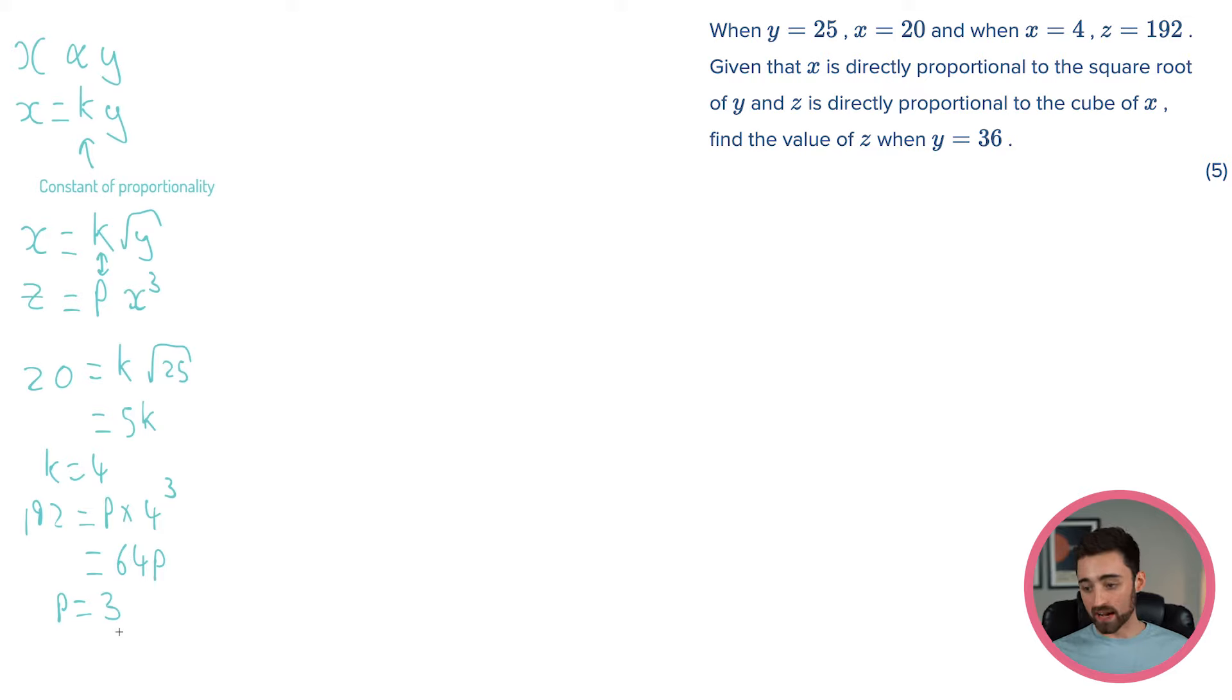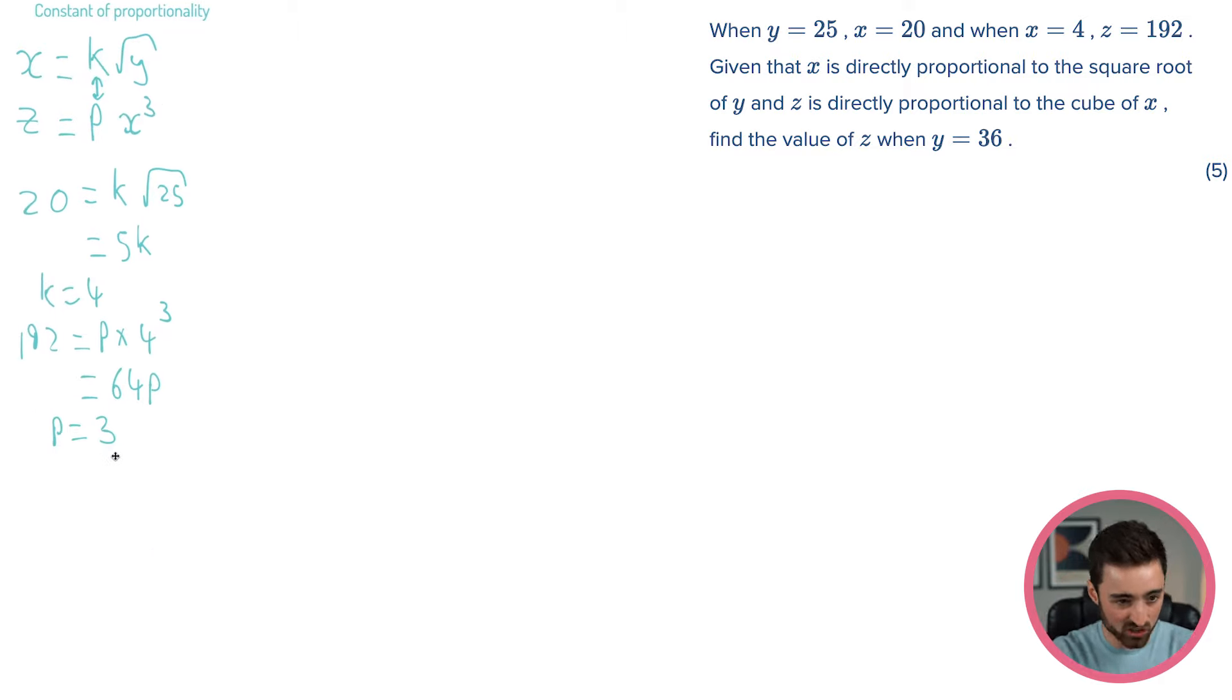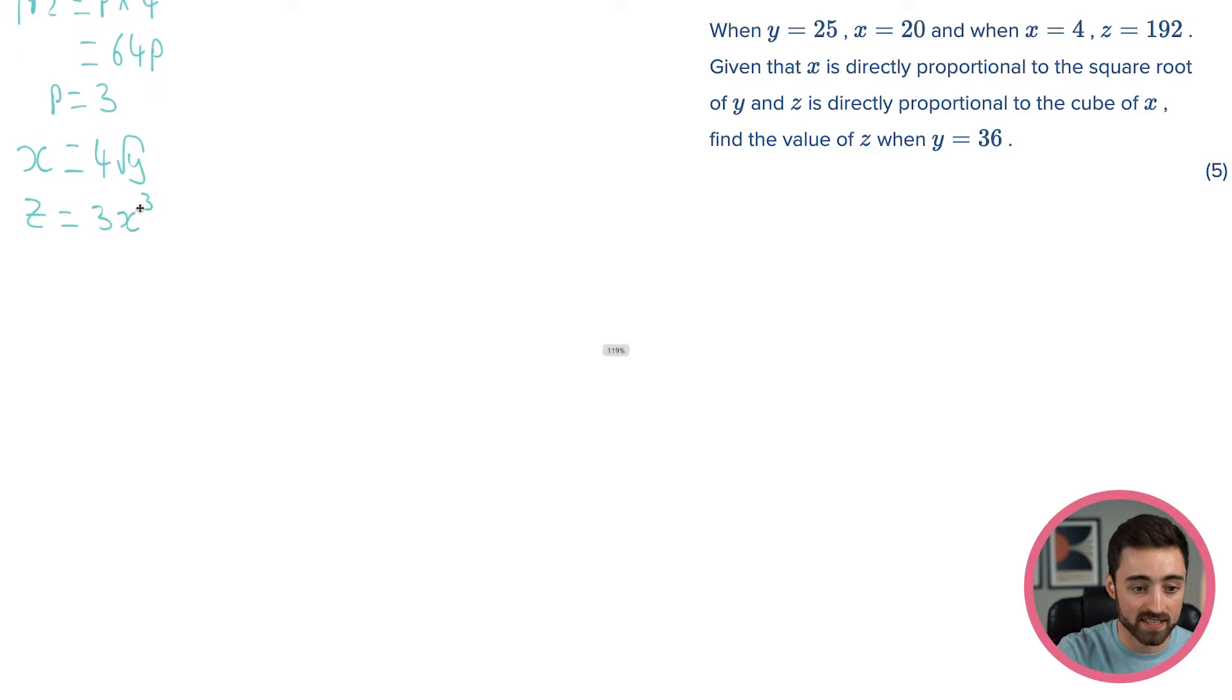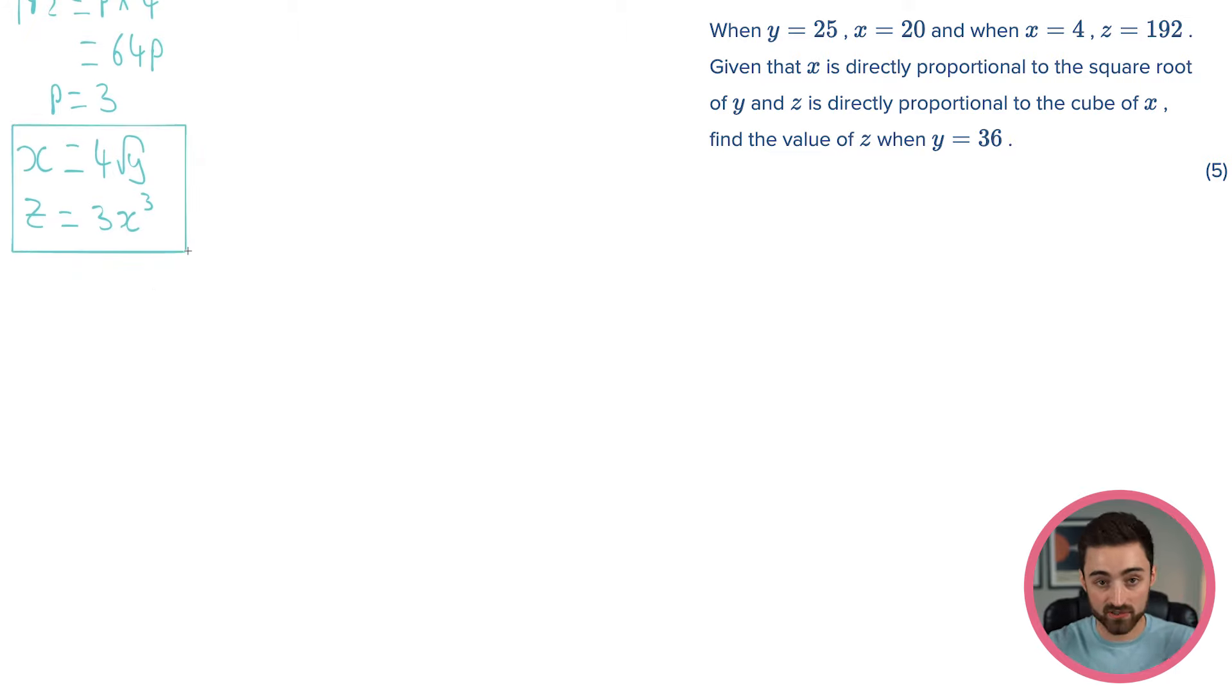So are we done? Well, not quite. Because we still need to work out the actual thing that the question is asking us for. So we've got our constants of proportionality. So just to consolidate all of that, I want to rewrite our equations now. x equals k root of y, but we know k, so it's 4 times the square root of y. And z is equal to 3x cubed. So this is now basically where we're at. Because now we just have relationships between these variables. So it's now super easy to just sub it in.